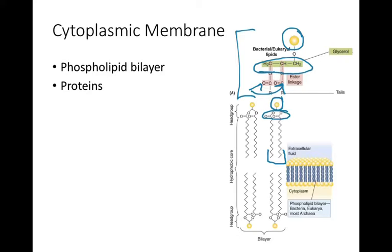The structure of this membrane is such that the phosphate head groups interact with the aqueous solution the bacteria are found in, and also with the cytoplasm, which is an aqueous solution as well. The phospholipid tails point toward the middle, in between the phosphate head groups, creating that selectively permeable barrier.